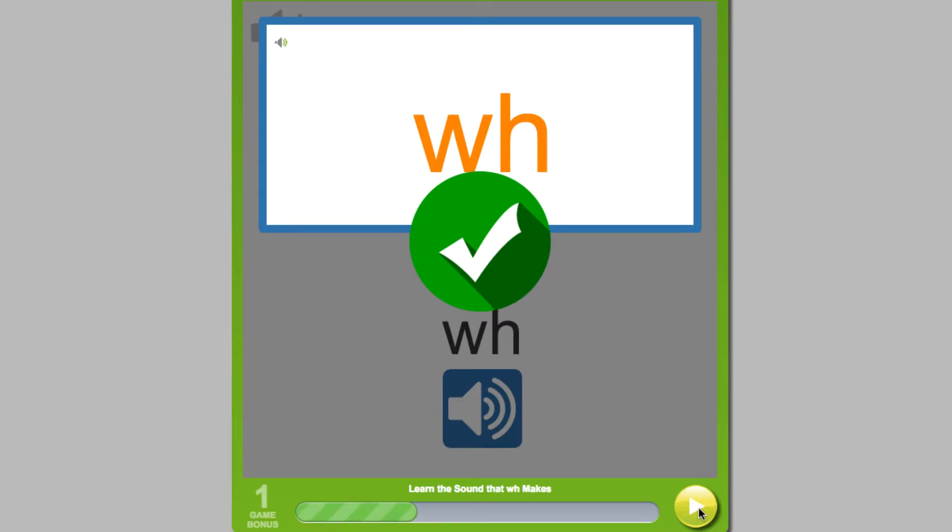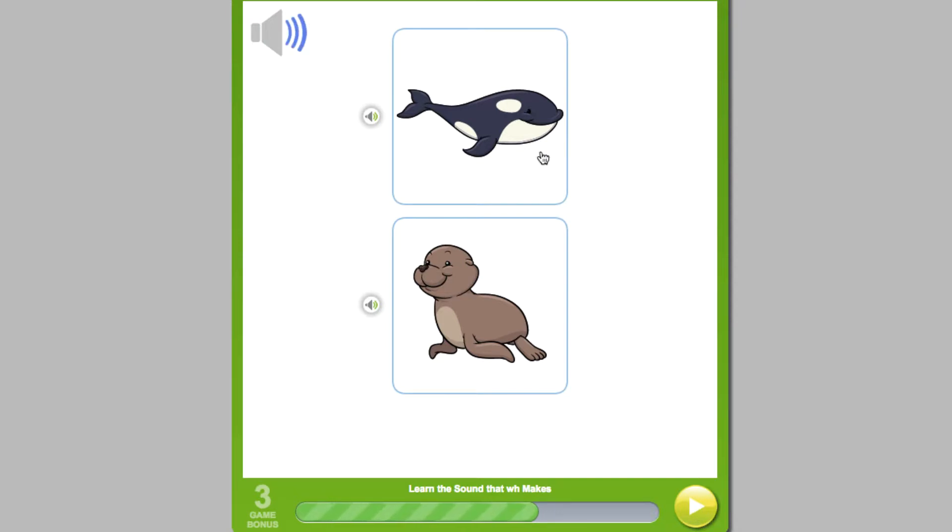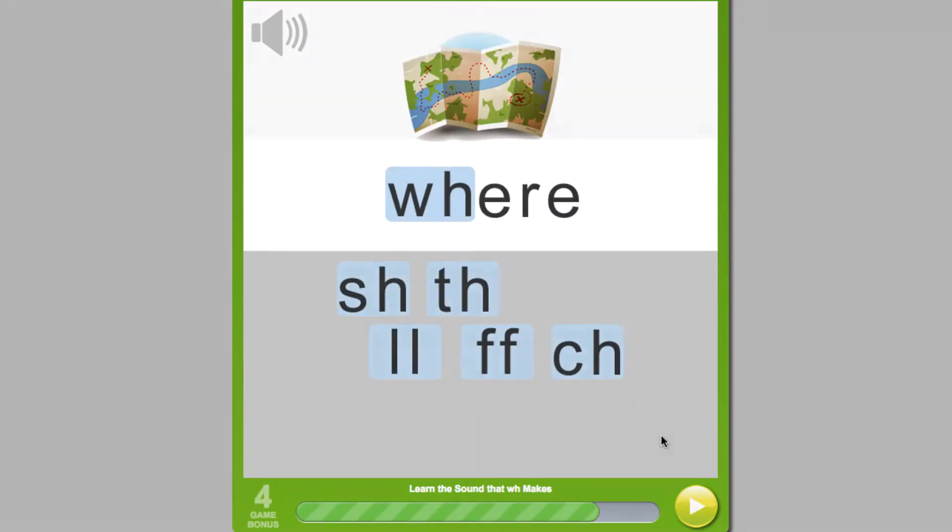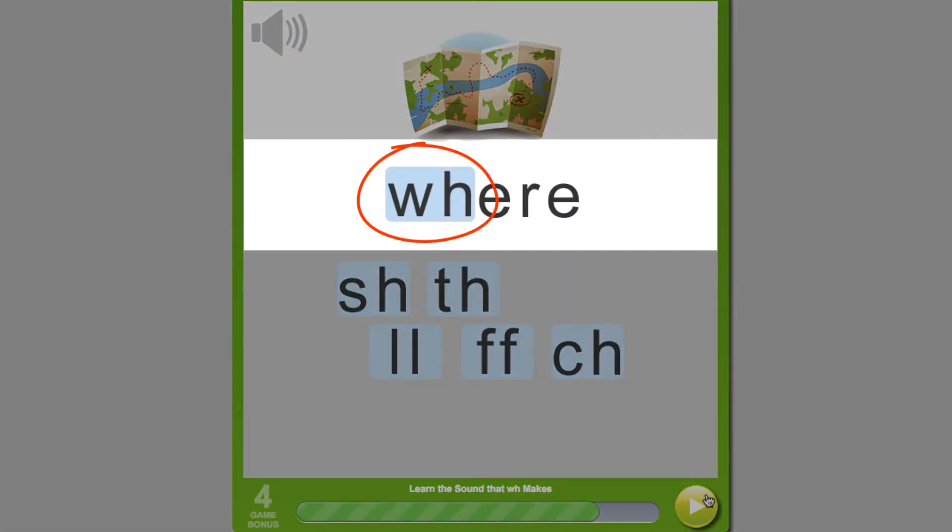Let's take a peek at some of the other manipulative question types. Here, the student must choose the picture of the word that has the WH sound. And here, the student completes the word with the WH sound.